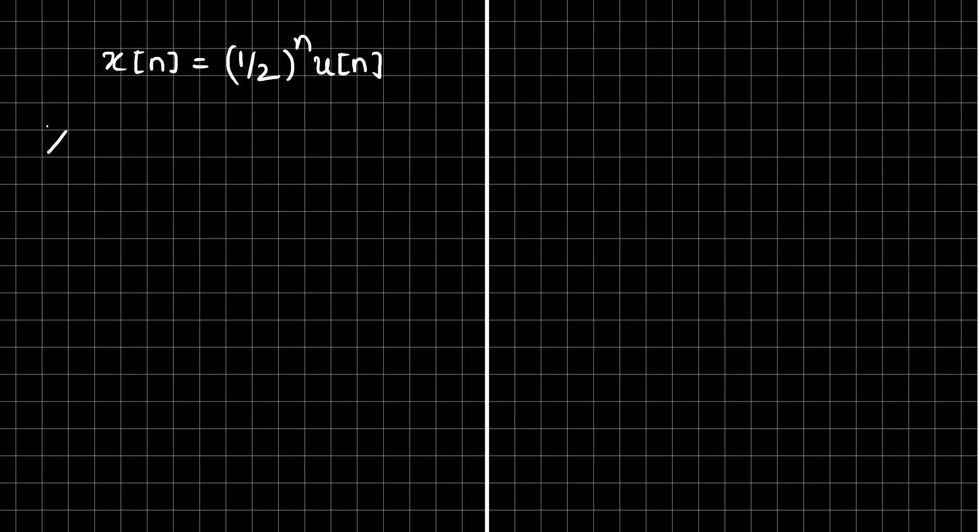We have X(z) equals summation n running from minus infinity to infinity X(n), which is 1 by 2 to the power n times u(n), times z to the power minus n. Now as the signal is multiplied by this unit step, we can change the limits from zero to infinity and drop this term of u(n). Therefore, we have summation n running from zero to infinity 1 by 2 to the power n times z to the power minus n.